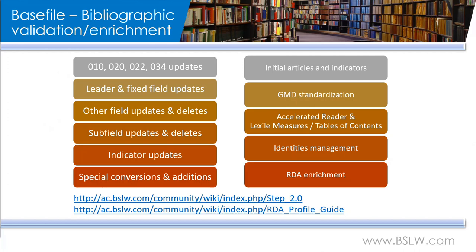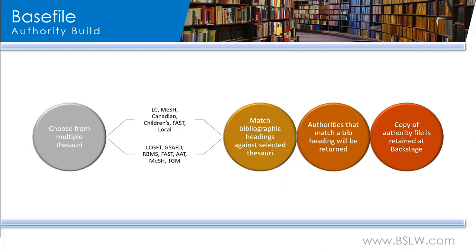All of our validation and RDA enrichment processing is completely customizable. While we do have defaults that we recommend, we realize that not every library was cut from the same mold, so we make sure to mold the services into what you need. After the validation is complete, we begin our auth master build. You have the option of selecting vocabularies that you would like to match your headings against. If there are any you'd like to explore that aren't listed, we'd be happy to talk further. If you have a separate authority file of local names or subjects, we can certainly incorporate those as well.